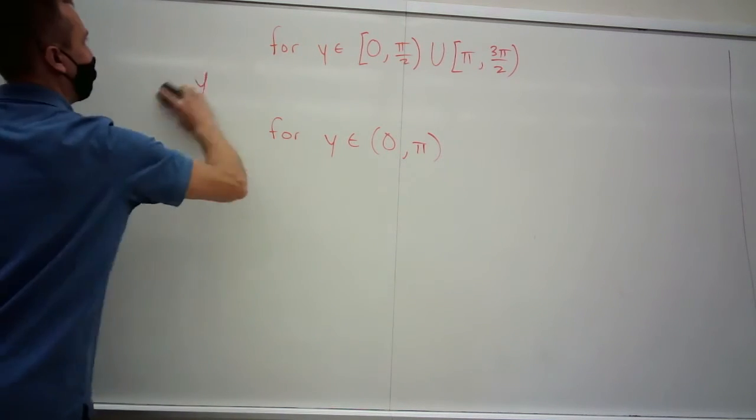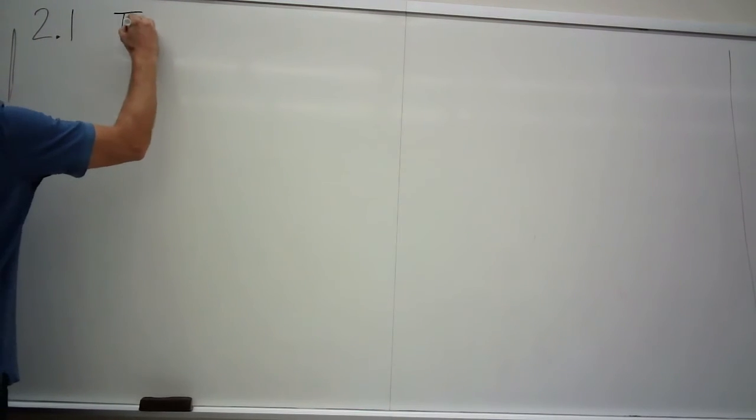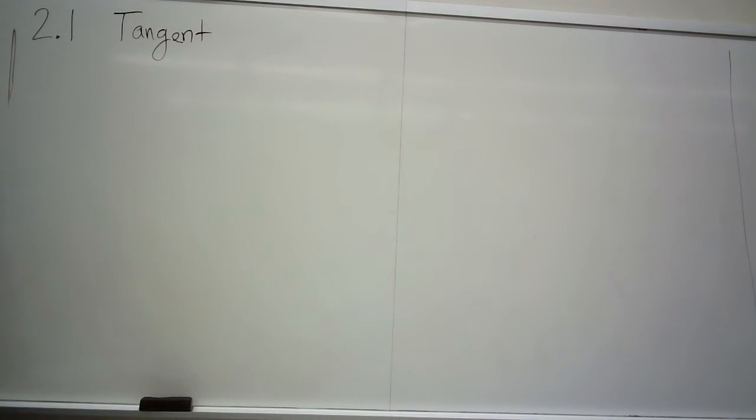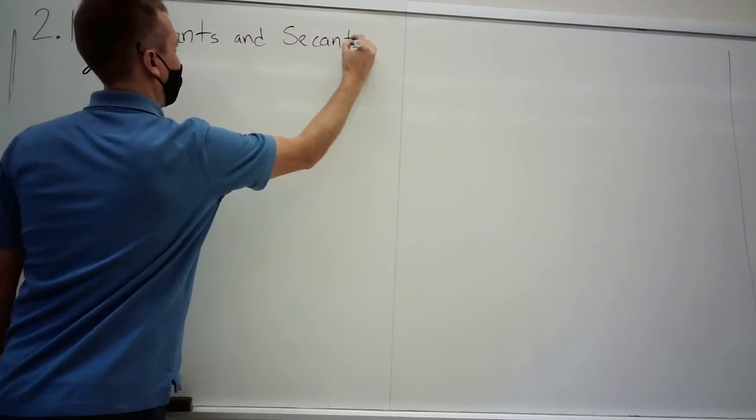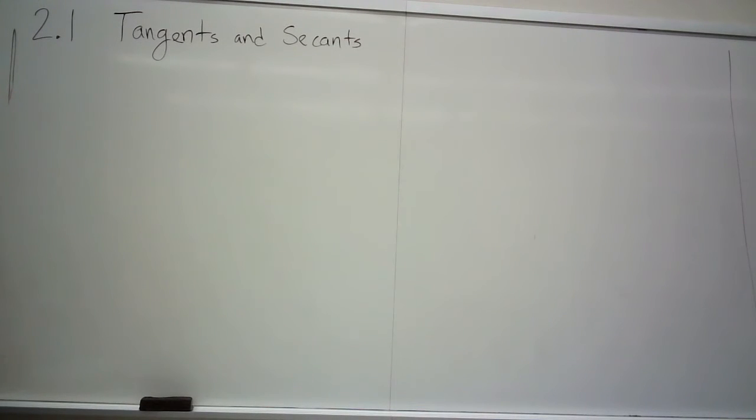Here we go. That's it for 1.5. We are now moving on to section 2.1. We need to apologize right away because the words we're going to be using today are very similar to the words we've been using just a minute ago. We're going to use this word tangent again, but it's not the same tangent. Sorry. It gets worse. We're going to be using this word secant, but it's not the trig secant.